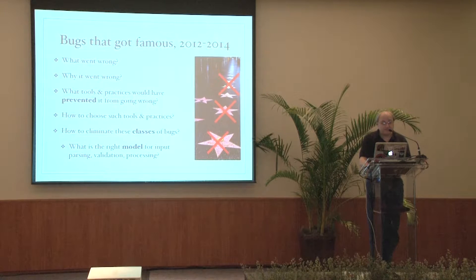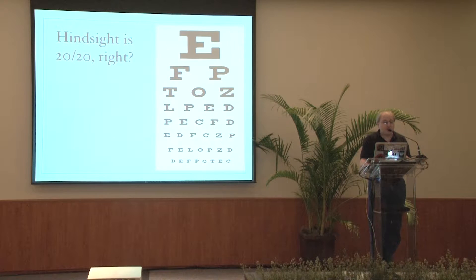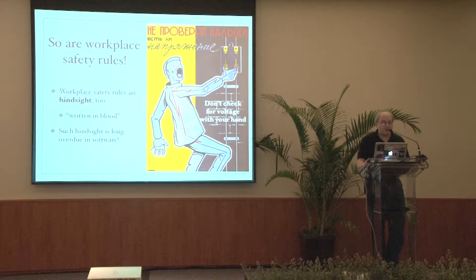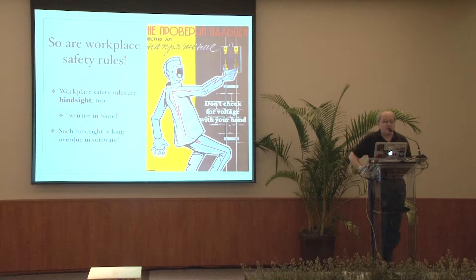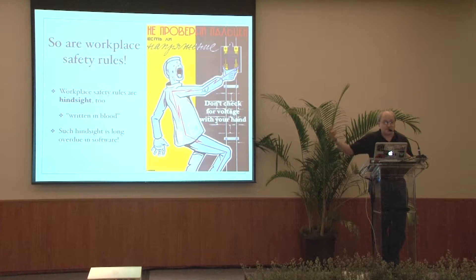And that's exactly what we're going to do. You could say hindsight is 20-20 — once the bug has been discovered, it looks simple. But there is another kind of hindsight: workplace safety rules. Simple rules, like 'don't check for voltage with your bare hand.' There's a saying in Russian that workplace safety rules are written in blood, because behind each simple rule there is a gruesome accident. Such simple rules are long overdue in software, because it's usually not the developer who suffers — it's the end customer, the user. As Felix Lindner FX says, there are only two industries that call their customers users: the drug industry and the software industry. Interestingly, neither has liability.